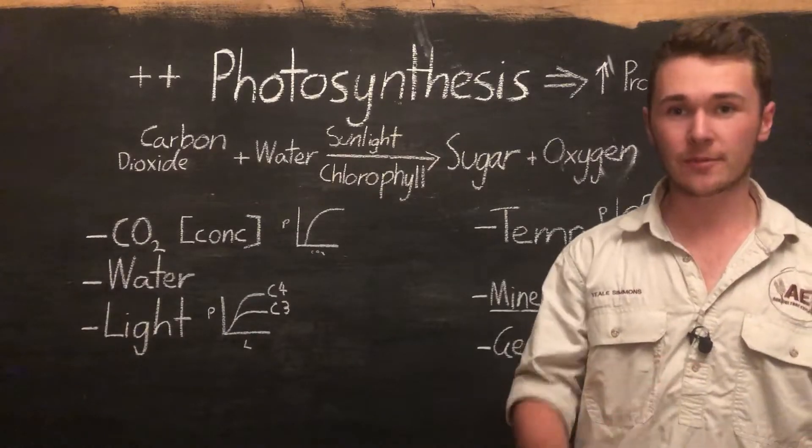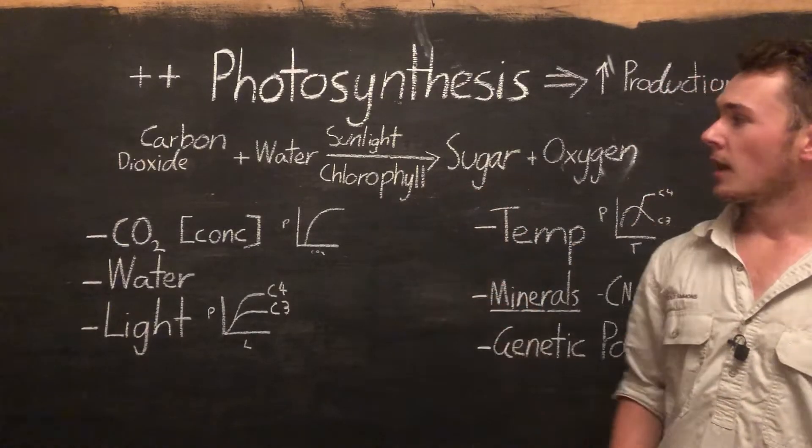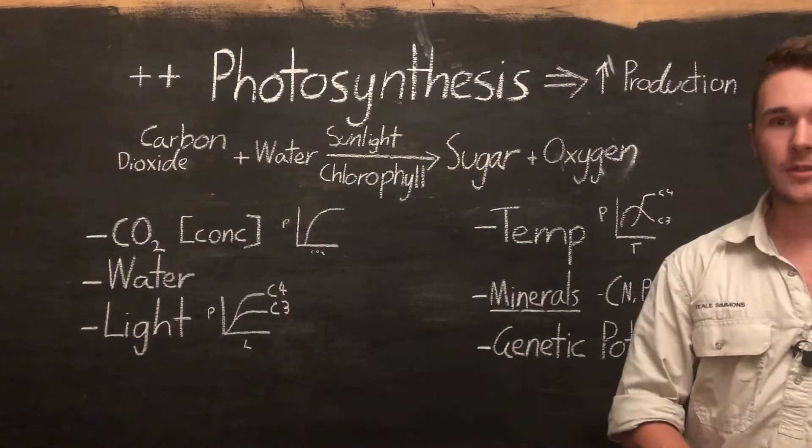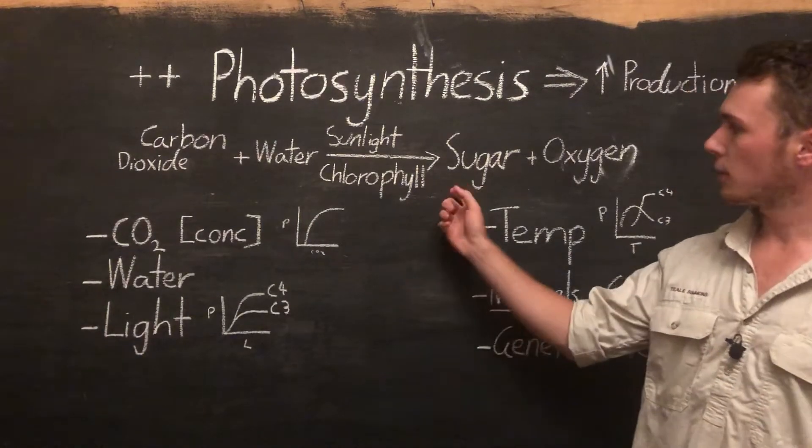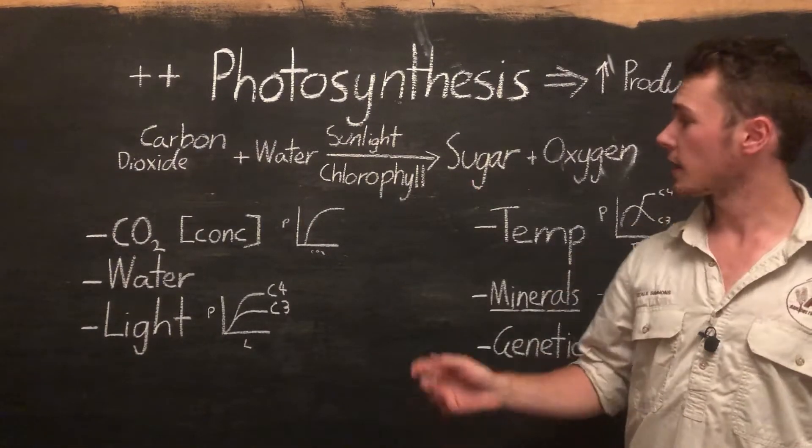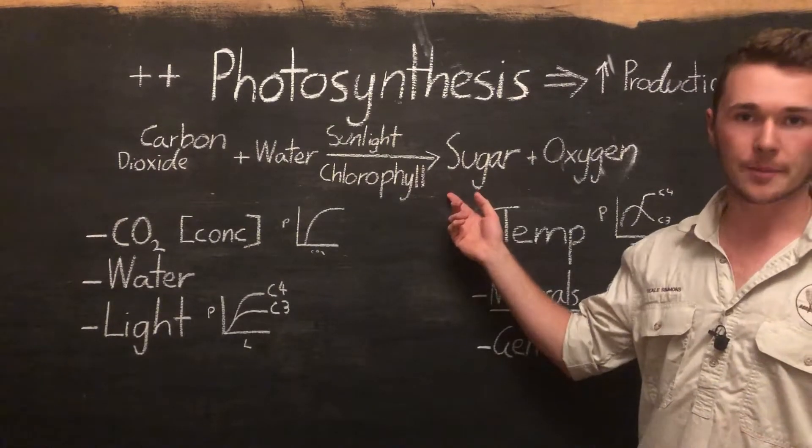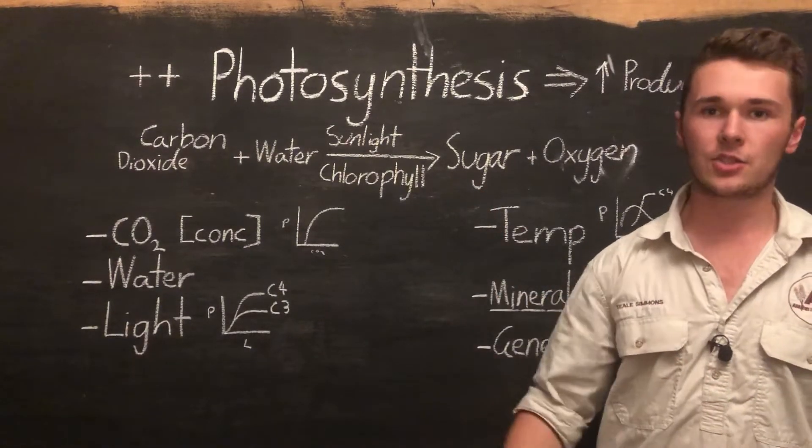As we know from the previous video, photosynthesis is the process where plants make their own food as sugar. This sugar is then used in the growth and development of the plant and supplies it with energy and materials to build more plant material.